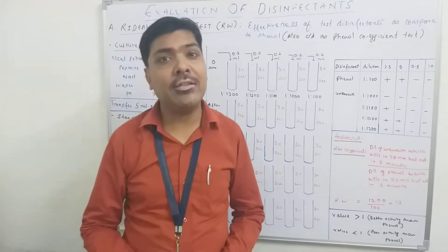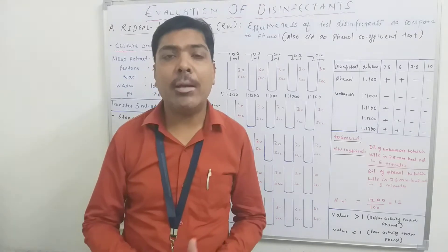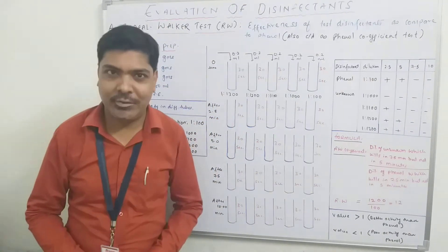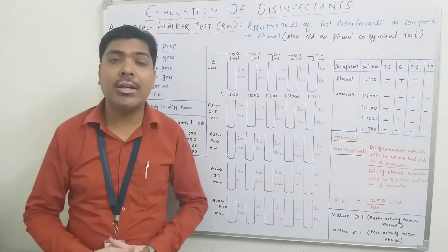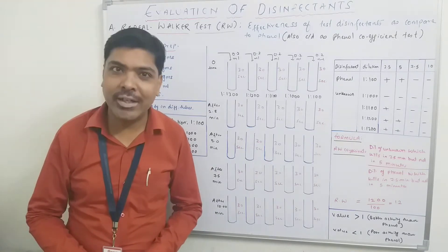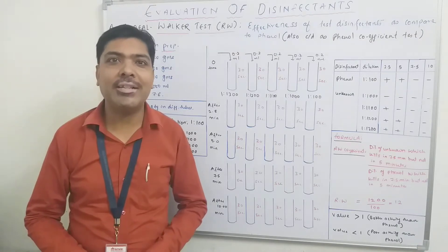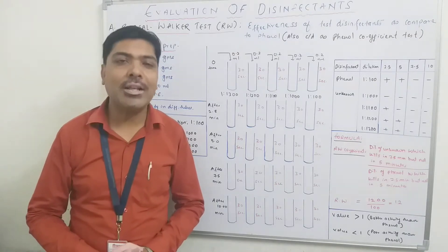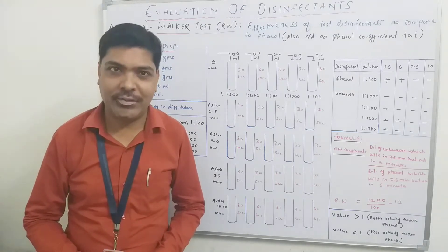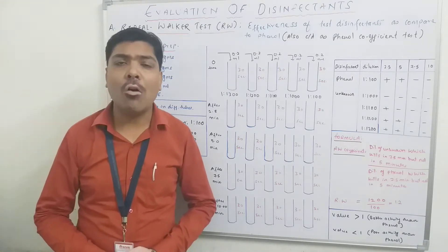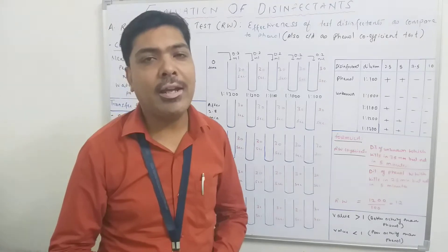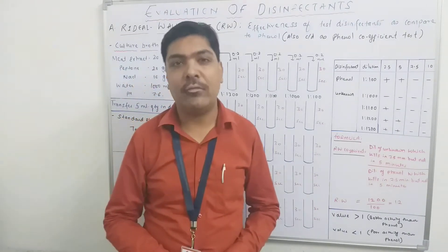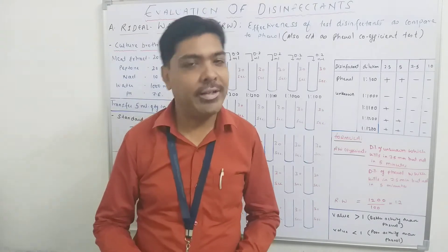In today's video lecture, we will discuss the laboratory method called the Riddeal-Walker test. There are many methods available including the Riddeal-Walker test, Chick-Martin test, use-dilution test, and calcicide test. But today we are going to discuss the Riddeal-Walker test, which is a very common test conducted in any microbiological laboratory for the evaluation of the efficiency of any unknown disinfectant.